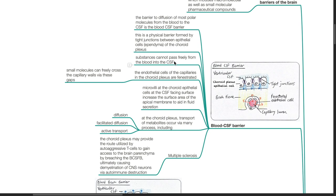The endothelial cells of the capillaries in the choroid plexus are fenestrated. Small molecules can freely cross the capillary walls via these gaps. Microvilli at the choroid epithelial cells at the CSF-facing surface increases the surface area of the apical membrane to aid in fluid secretion.